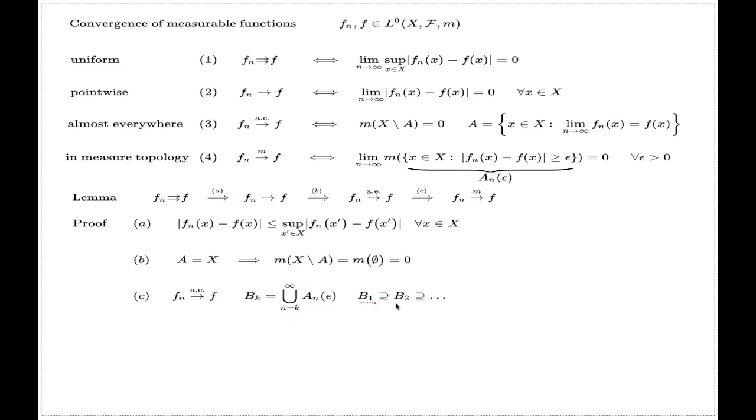This is the decreasing sequence of subsets. B1 is the largest, B2 is smaller, B3 is even smaller, because every time when you increase the index, you decrease the amount of sets which are involved in this union. Now, we also take the set B, which is the intersection of all of these, and which also can be described with the help of the concept of limsup of subsets. Now, what I want to show is this, I want to show actually that this set B will be a subset in here.